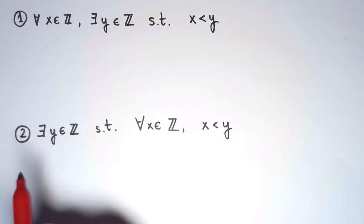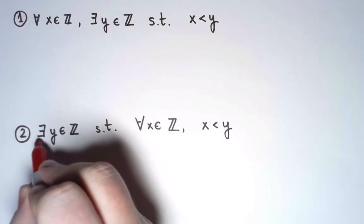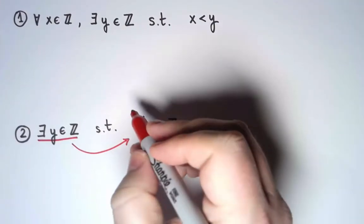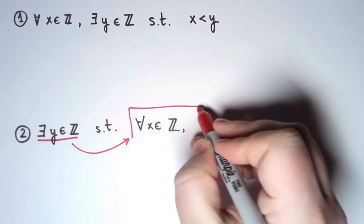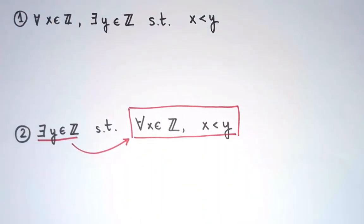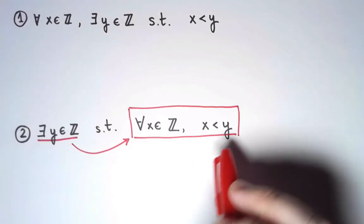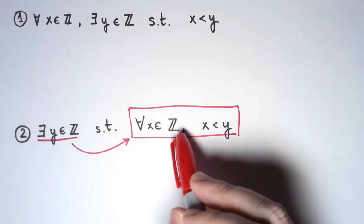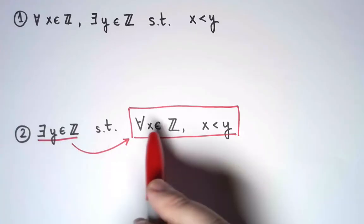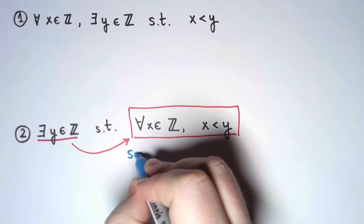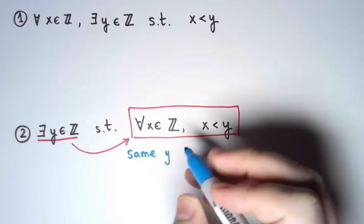Okay, I'm going to look first at the second statement. In this second statement, we say that there exists an integer y such that this is true. So there exists an integer y with this property. And the property is that for every integer x, x is less than y. So there exists an integer y that satisfies this, and it must be the same y for all values of x. That's the key part here. We are using the same y for different x.